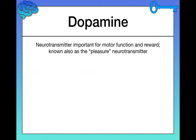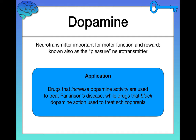Here's one you might have heard of before: dopamine. Dopamine is a neurotransmitter important for motor function and reward — the reward piece being part of the reason we call it the pleasure neurotransmitter. But it's all about balance; not enough dopamine and too much dopamine are both very detrimental. Drugs that increase dopamine activity are used to treat Parkinson's disease, while drugs that block or reduce dopamine activity are used to treat schizophrenia.